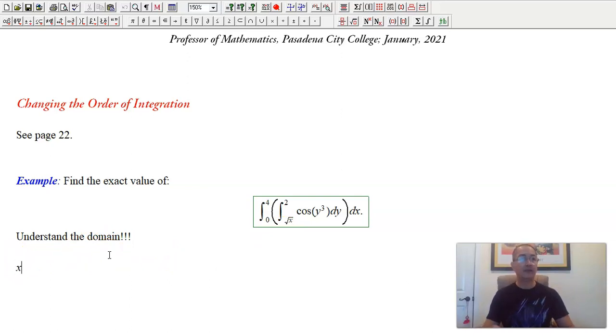Let me warn you right now, that doesn't mean I'll just change these two integral symbols. Or maybe just change x to y. It doesn't work that way. So how does it work? Understand the domain. So we said x is going from 0 to 4, and y is going from square root of x to 2.